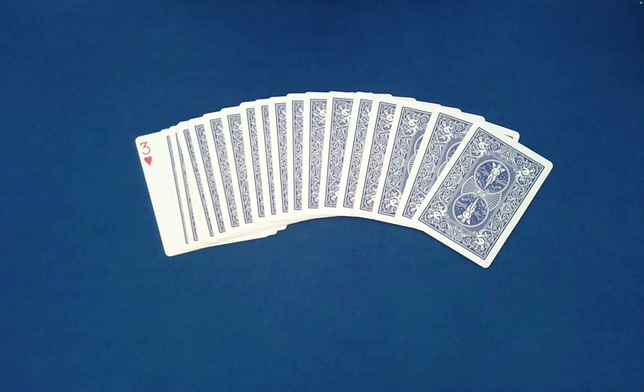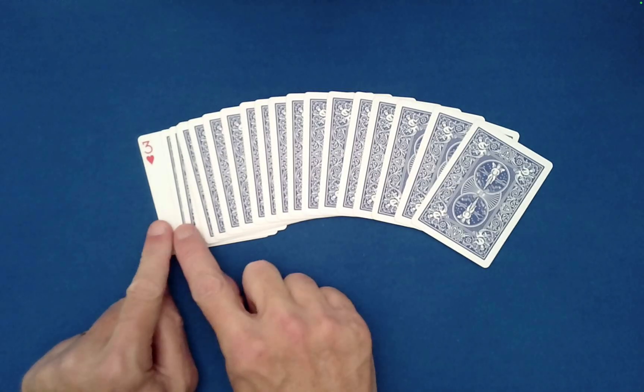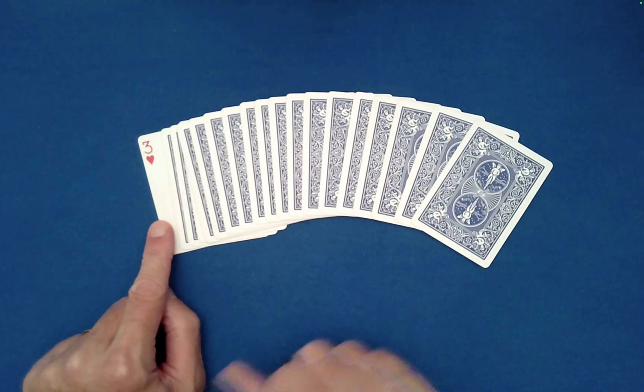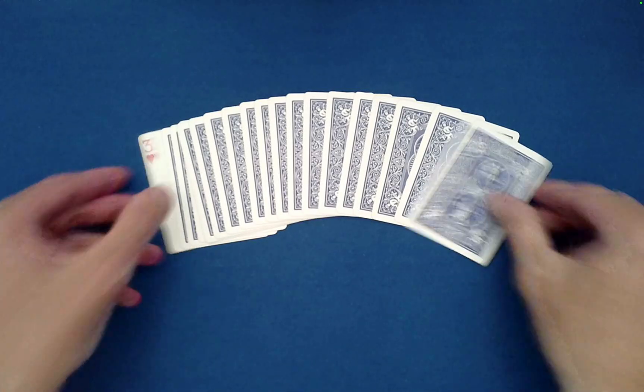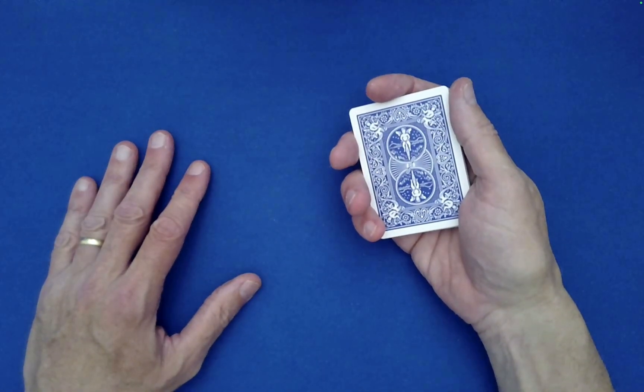And then you just spell out their first name. Well even if they only have one letter in their first name, this card's going down first which is where we need it to be. So I spelt Robert R-O-B-E-R-T, that's fine, but really any name will do.